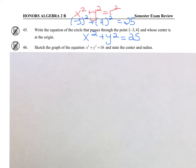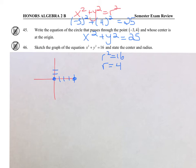For problem 46, to graph this circle, the center is at (0, 0) and R squared is 16, which means the radius is 4. I'll go 4 units in every direction from the center and connect the points in as nice a circle as possible.